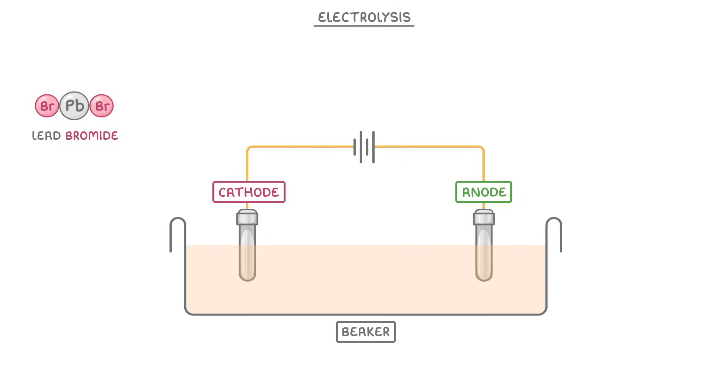Now the word electrolysis literally means splitting up with electricity, and that's exactly what it does. By using our battery to pass an electric current through the electrolyte, which in our case is molten lead bromide, we can separate out the lead and the bromine.